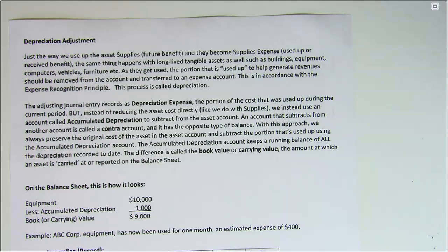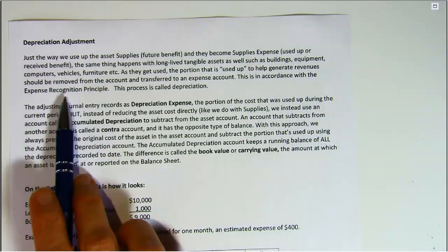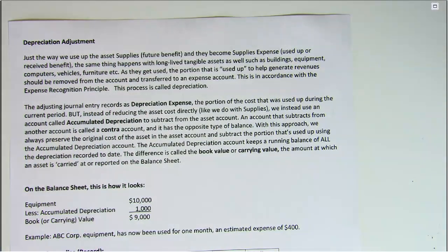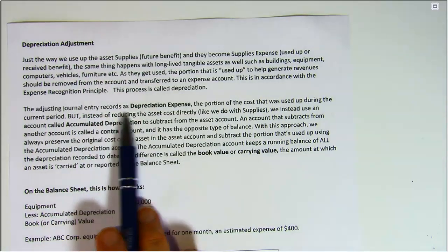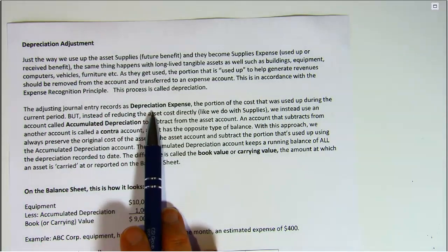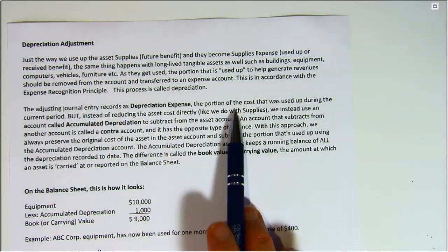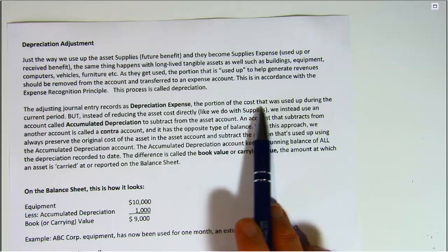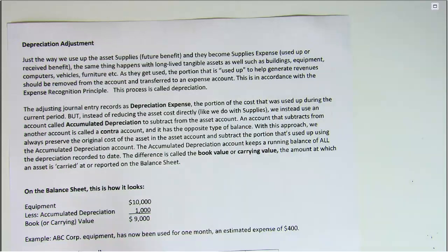That's in accordance with the expense recognition principle, and the process is called depreciation. The adjusting journal entry records as depreciation expense the portion of the cost that we estimate was used up during the current period.